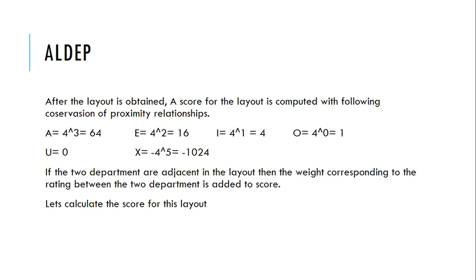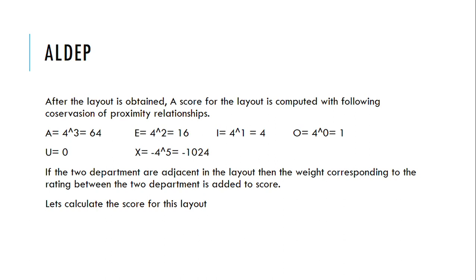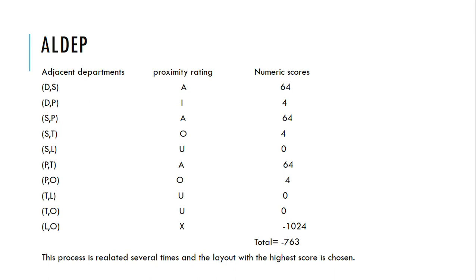After the layout is obtained, a score for the layout is computed using the conservation of proximity relationships. For each rating given to a department relation, if two departments are adjacent in the layout, then the weight corresponding to the rating between the two departments is added to the score. Here we have calculated the score of our layout, with scores given for each relationship between the departments.